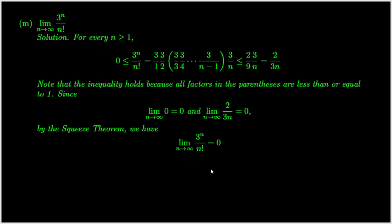We now work on question 5m. Using the definition of factorials, we can see the inequalities on the screen all hold for any n. Moreover, the limit of the sequences on the two ends are equal. By the squeeze theorem, we have the required limit.